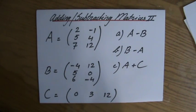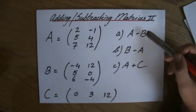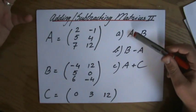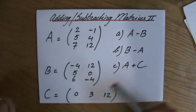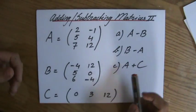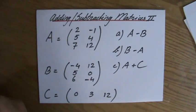We're still adding and subtracting matrices. I wrote down three matrices: A, B, and C, and three questions: What is matrix A minus matrix B? What is B minus A? And what is A plus C, or the result of adding matrix A with matrix C?